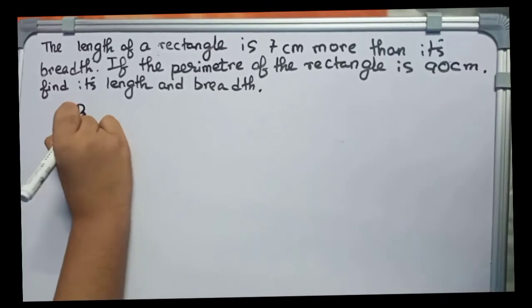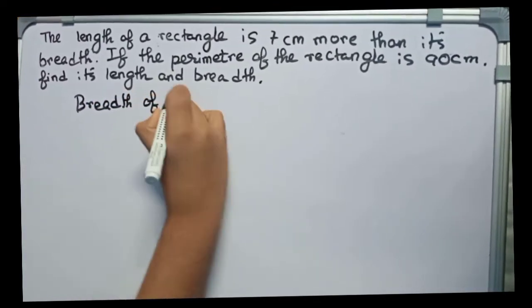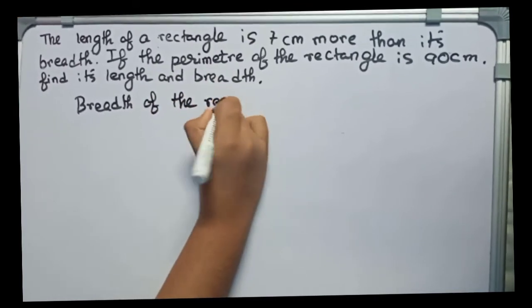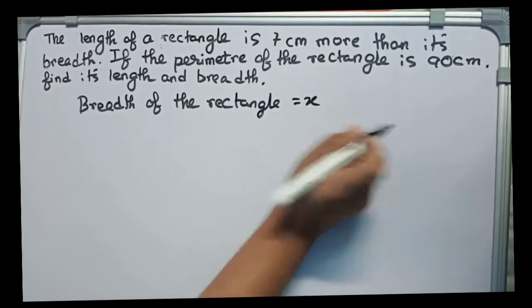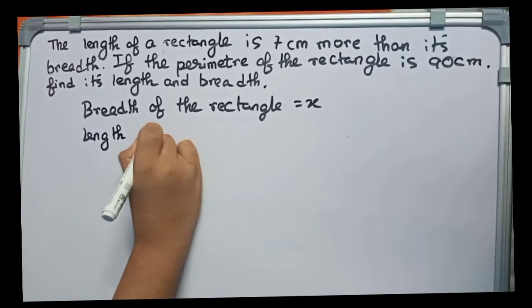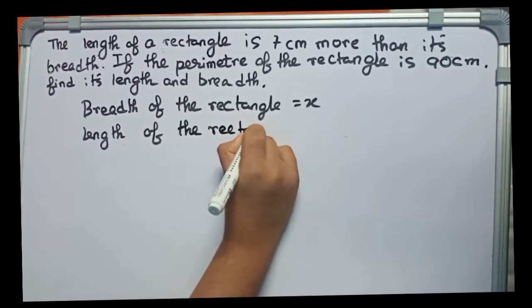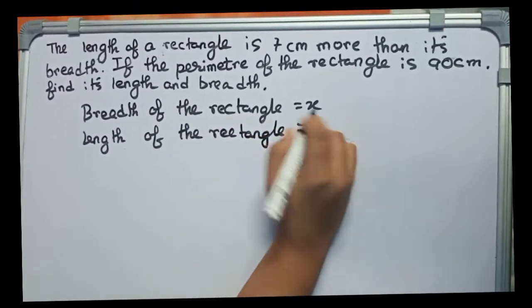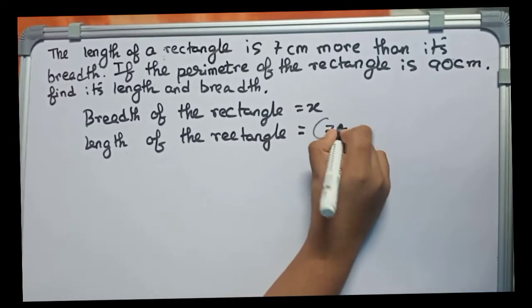First, write the breadth of the rectangle equals to x. Now I find the length, length of the rectangle. Because it is given 7 centimeters more than its breadth, therefore it will become 7 plus x.